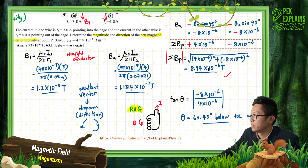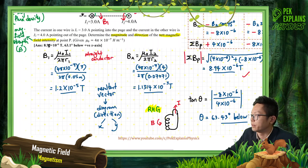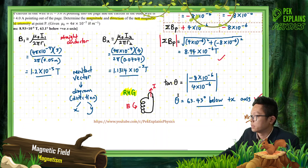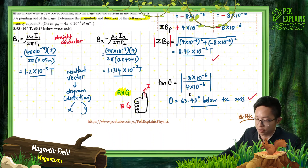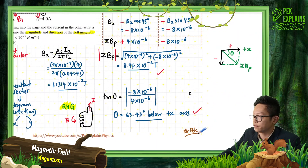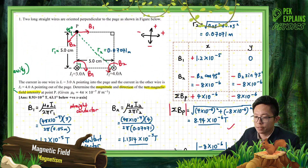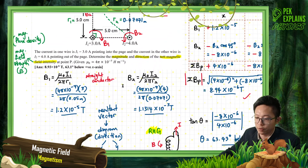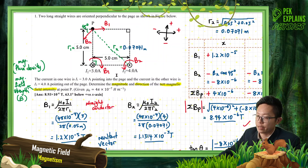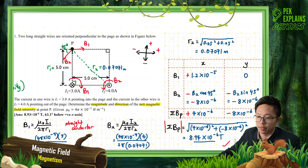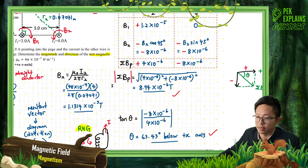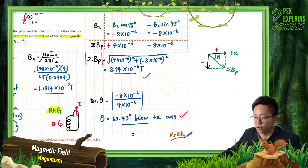So the answer is confirmed: magnitude 8.94 × 10⁻⁶ Tesla at 63.43 degrees below the positive X axis. In summary: find B1 and B2 magnitudes, find direction using the right-hand grip rule, resolve into XY components, then find magnitude and direction theta. That's it for this question. Thank you, see you in the next video.